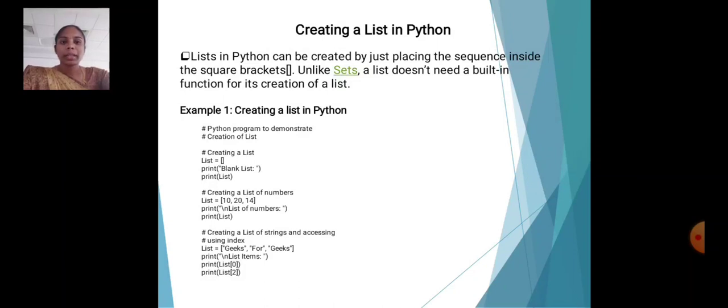Creating a list in Python. Python program to demonstrate creating a list. Creating an empty list: list equals empty brackets, print list. Creating a list of numbers: list 10, 20, 14, print list of numbers, print list.